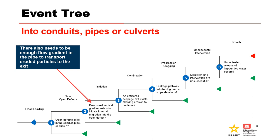Node 3 is continuation: an unfiltered exit exists that allows erosion to continue. Node 4 is progression: the leakage fails to clog and a stope develops. The common progression node of holding a roof applies to concentrated leak erosion and is not evaluated for this internal erosion process. Node 5 is intervention: detection and intervention are unsuccessful. And finally, Node 6 is breach: uncontrolled release of impounded water occurs.